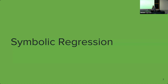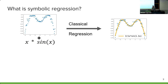What is symbolic regression? To answer that, we need to go back and look at classical regression. In classical regression algorithms, you have some numerical data set, and you have a pre-chosen functional form of an equation that you want to fit to that data set. The classical regression algorithm will then find the coefficients in order to fit the data set to the equation.